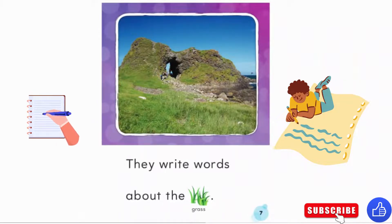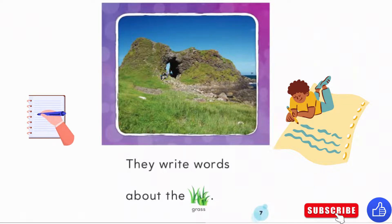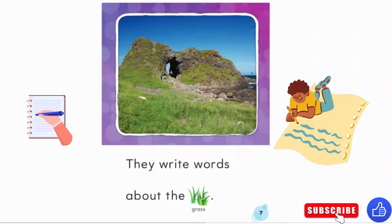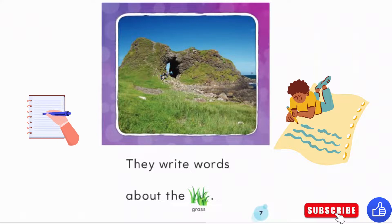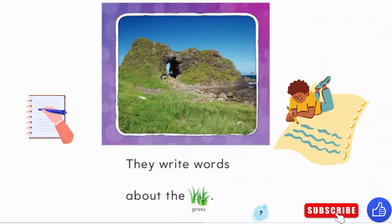They write words about the grass. What can we say about the grass? Is the grass green? Or maybe the grass is brown where you're at. Maybe the grass is tall, or maybe it's very short. Maybe there isn't any grass where you're at. This grass is light green, then there's dark green, then there's brown — all different colors in the grass in this picture.